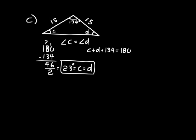Make sure you know the definitions of triangles based on their angles and based on their sides, that the sum of the angles inside is always equal to 180 degrees, and that for isosceles triangles, the angles opposite the two similar sides are equal to each other.